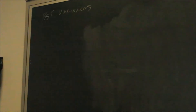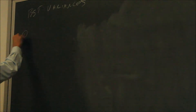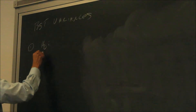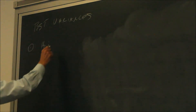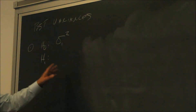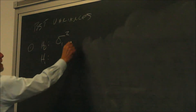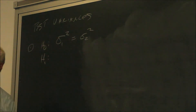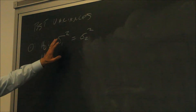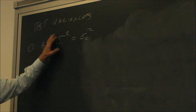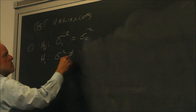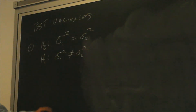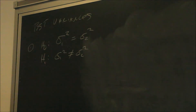In testing variances, you have all the same steps. The first step in the hypothesis test for variances is H sub O and H sub 1. The null hypothesis is sigma 1 squared equals sigma 2 squared — because sigma squared is a variance — and the alternate hypothesis is that sigma 1 squared is not equal to sigma 2 squared. These are very similar to the hypothesis tests we ran for means.